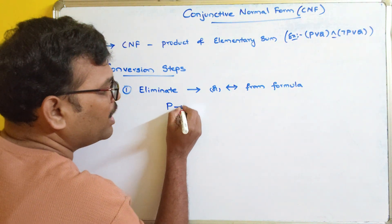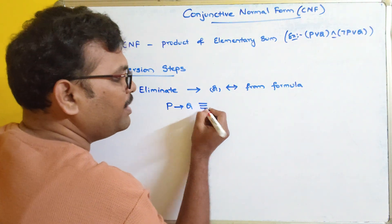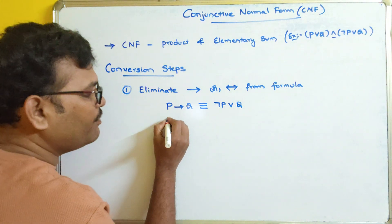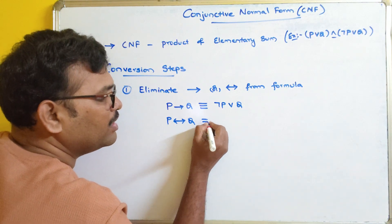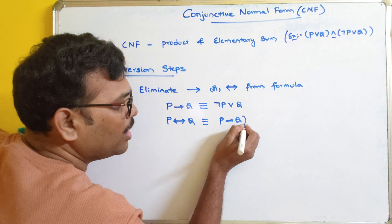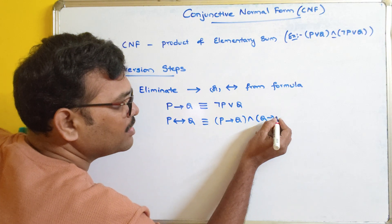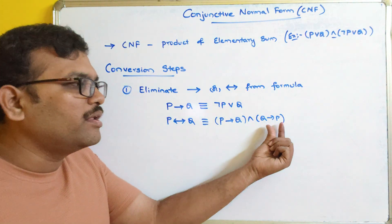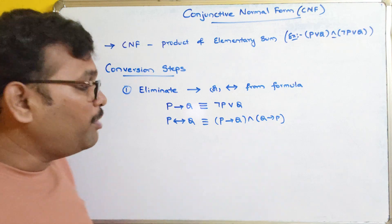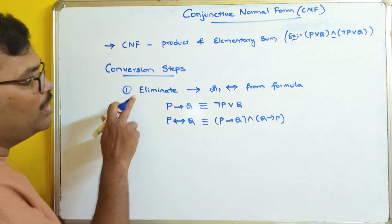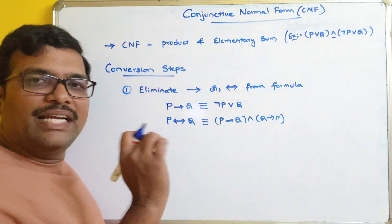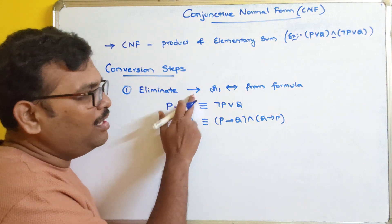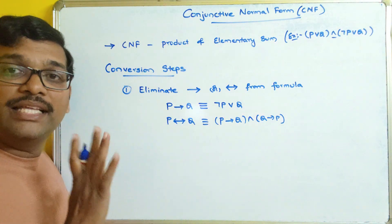For example, if any formula is in the form P implies Q, this can be written as negation P or Q. And if any formula is in the form P double implies Q, that is logically equivalent to P implies Q and Q implies P. Again, P implies Q becomes negation P or Q, and Q implies P becomes negation Q or P. So using these two logical equivalences, first we have to eliminate the conditional or bi-conditional connectives from the formula.